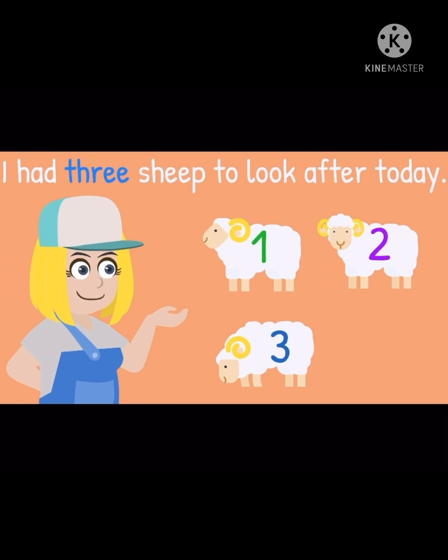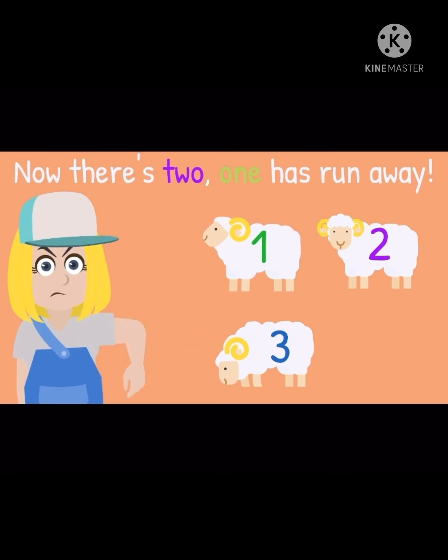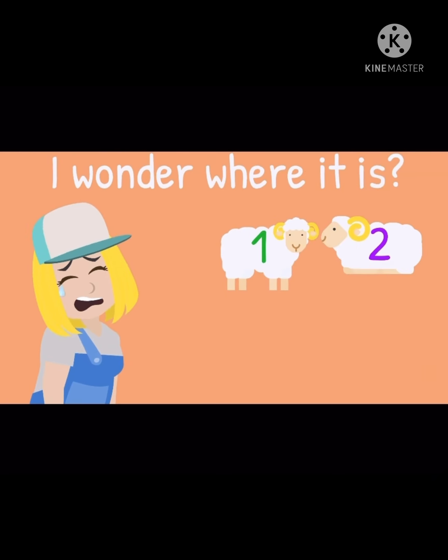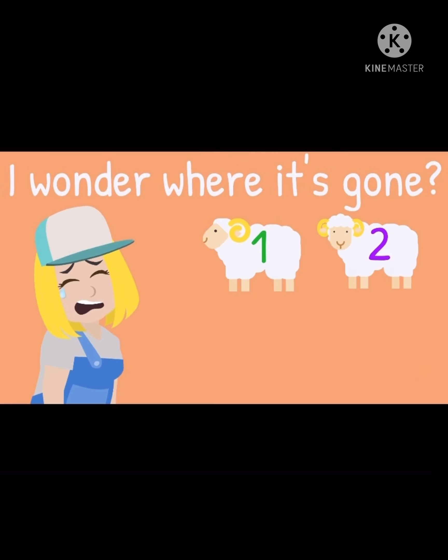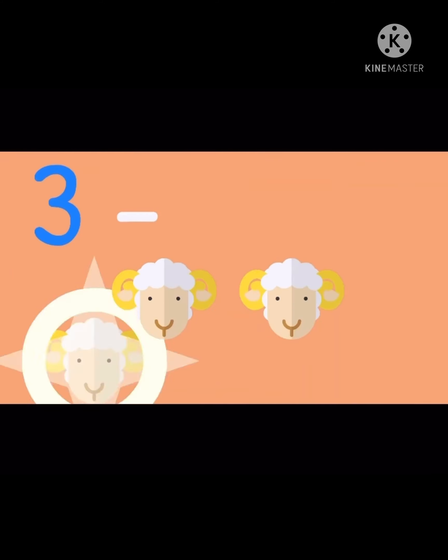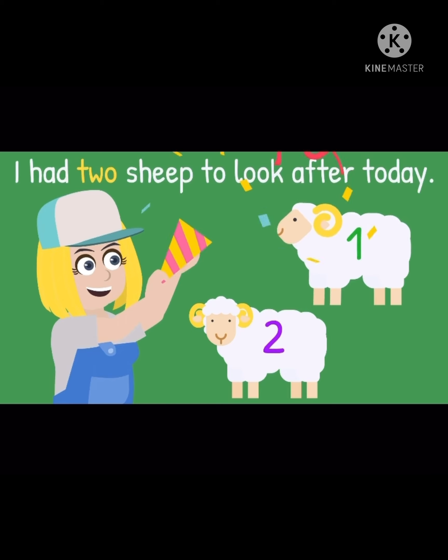I had three sheep to look after today, but now there's two. One has run away. I wonder where it is, I wonder where it's gone. Now I'm three minus one. Three minus one equals two. I had two sheep to look after today, but now there's one. One has run away.